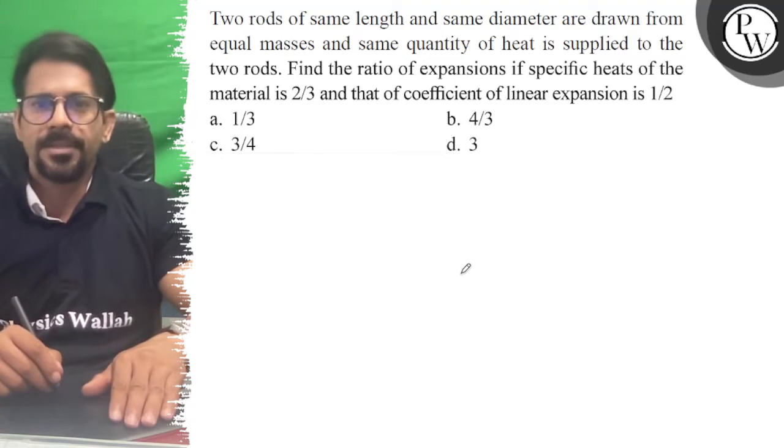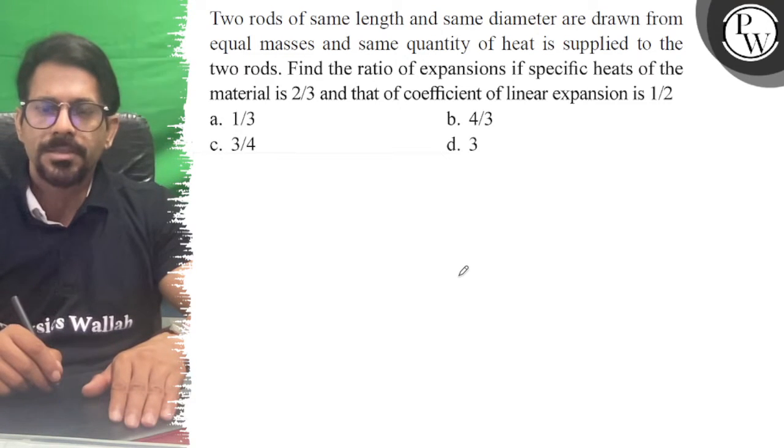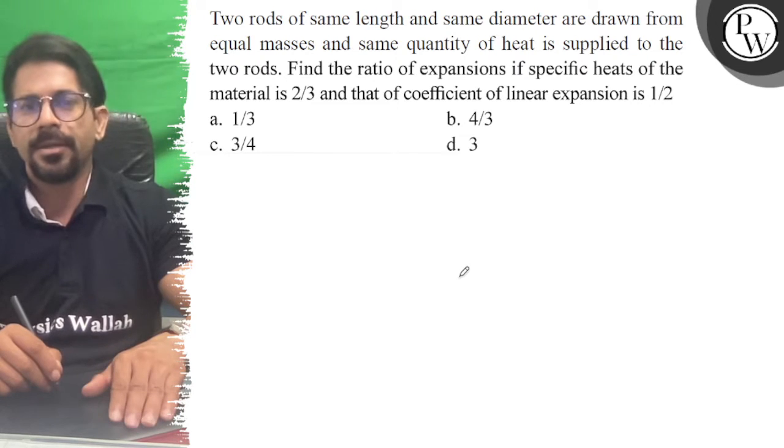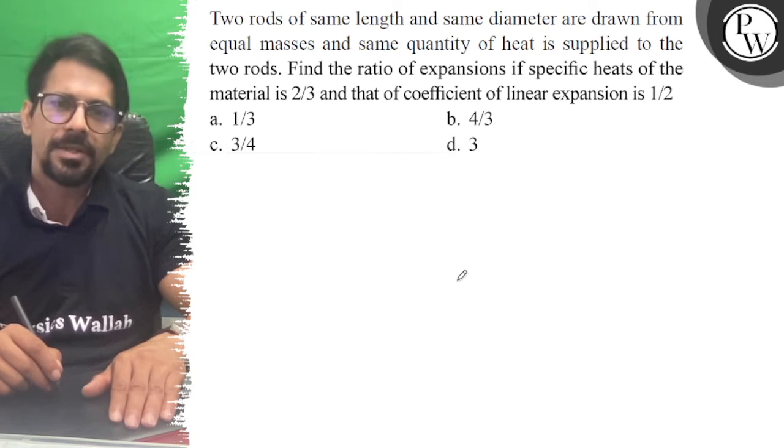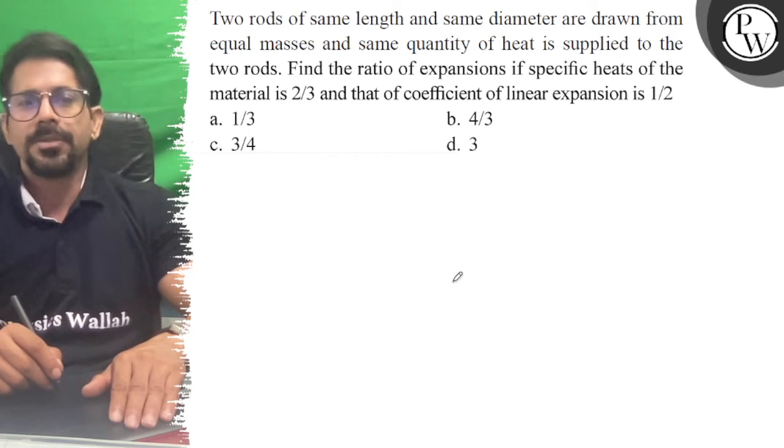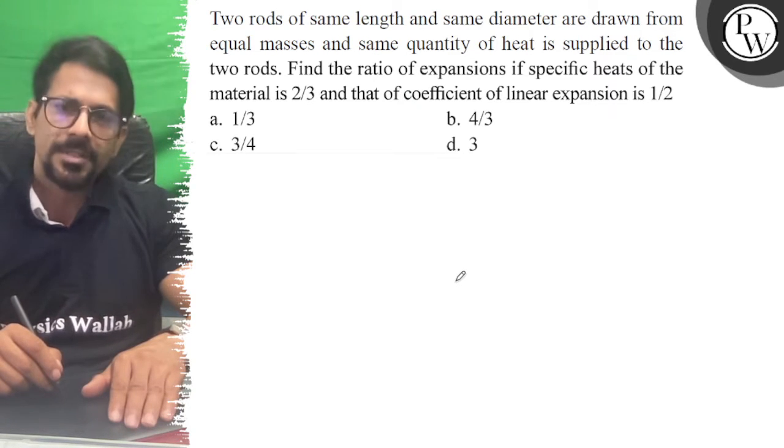Two rods of same length and same diameter are drawn from equal masses and the same quantity of heat is supplied to the two rods. Find the ratio of expansion if specific heat of the material is 2 by 3 and that of coefficient of linear expansion is 1 by 2.